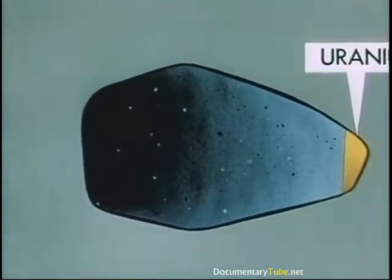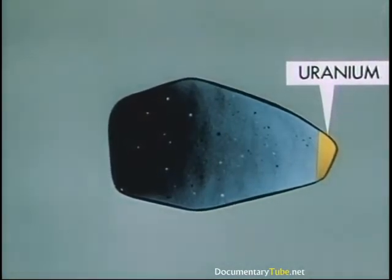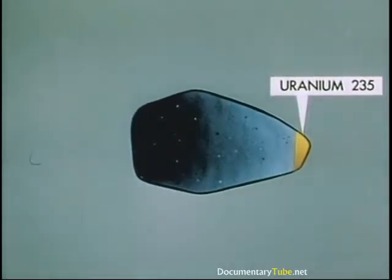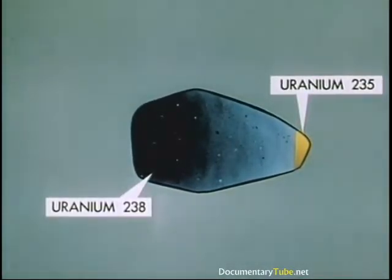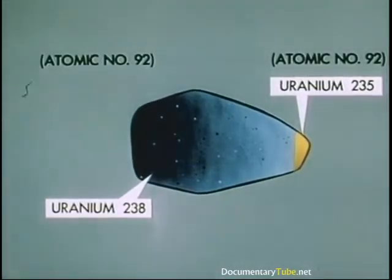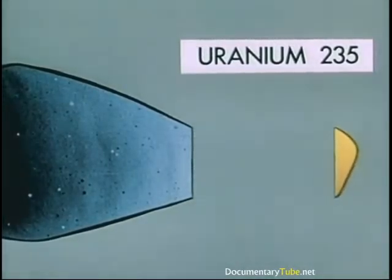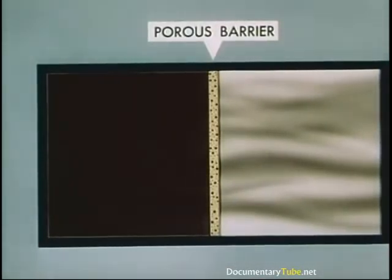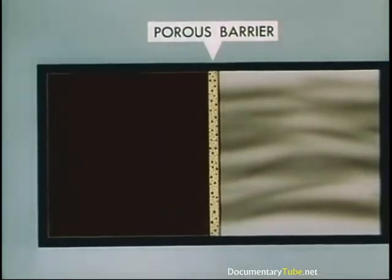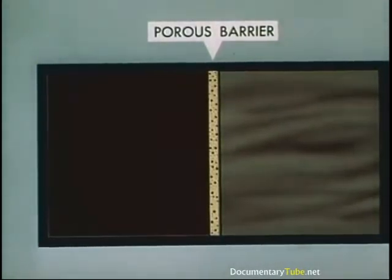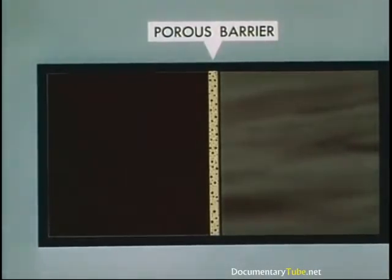They knew that uranium-235 was good fissionable material. They also knew it was scarce — one part in 140 of natural uranium is 235. An insignificant amount is 234, and the rest is 238, which wasn't a suitable ingredient. It was hard to extract the good from the bad, because being isotopes, both had the same atomic number of 92 and therefore the same chemical behavior. The very slight difference in atomic weights, however, made possible several ways of achieving separation by physical means. If natural uranium gas is passed along one side of a porous barrier with a greater vacuum on the other, the lighter 235 atoms will go through the barrier a bit faster than the 238, making it possible to enrich the uranium with the 235 isotope enough for fission purposes.